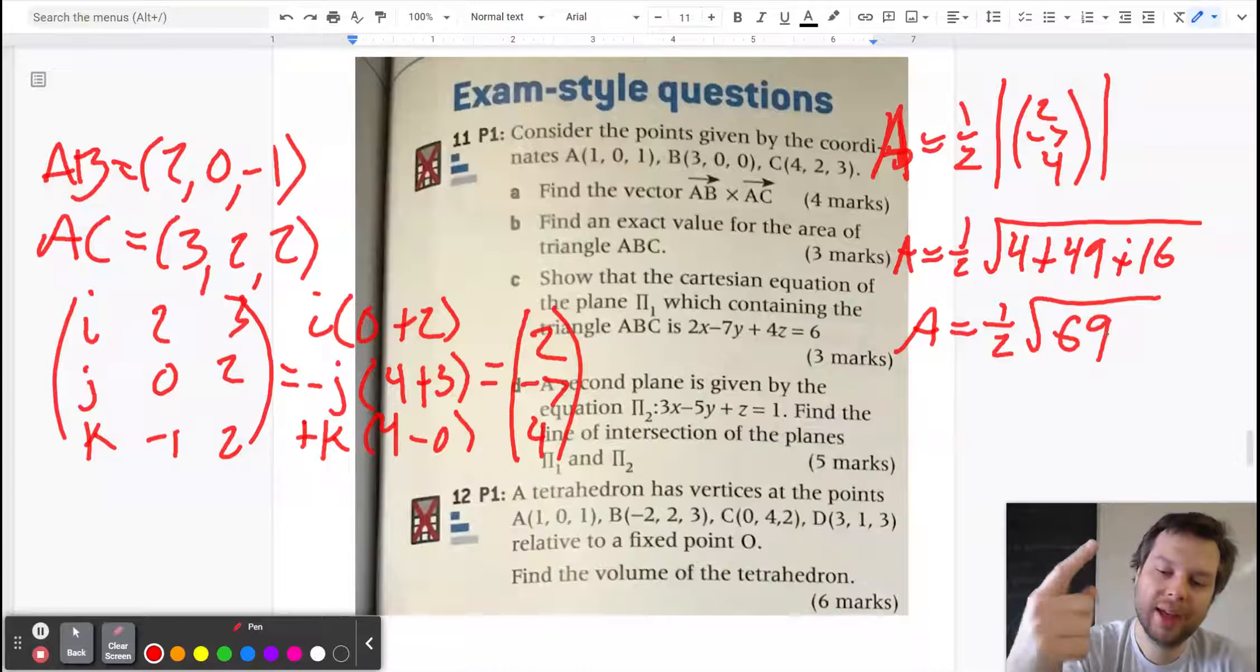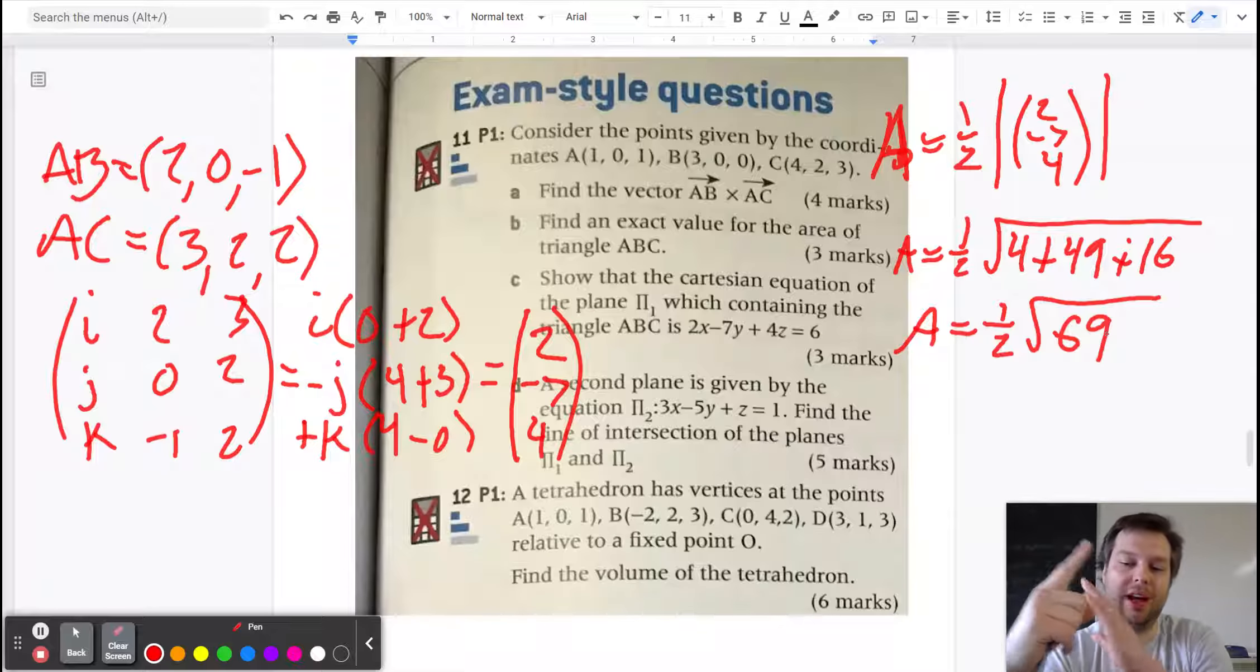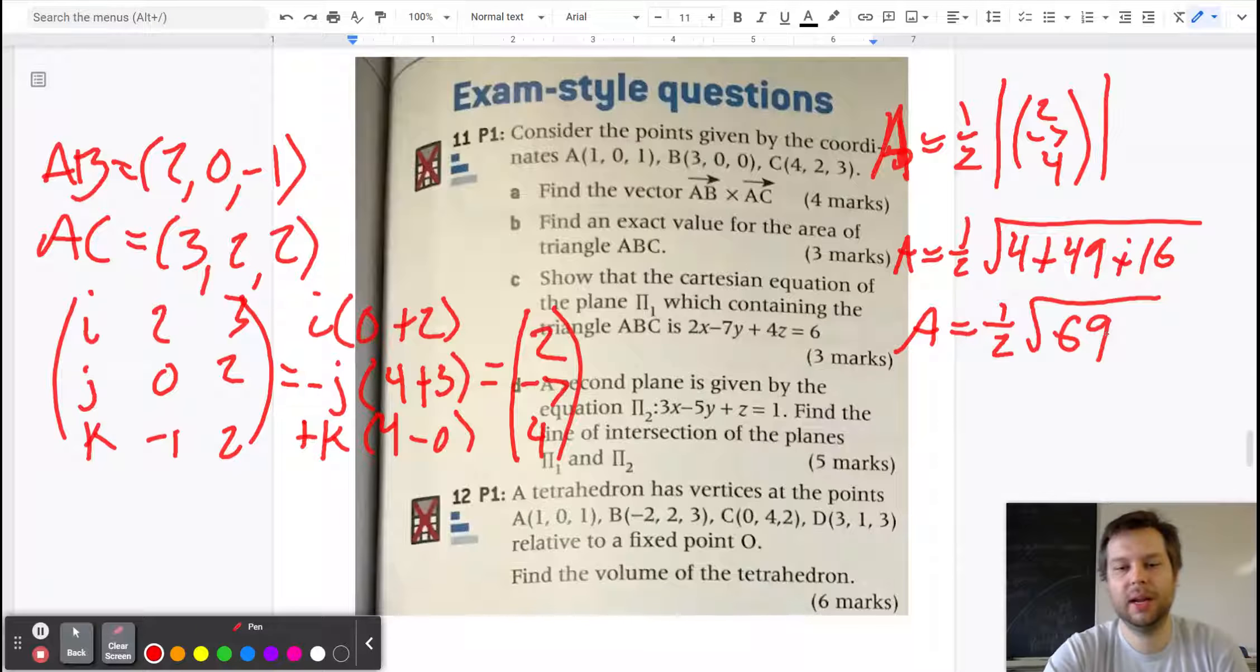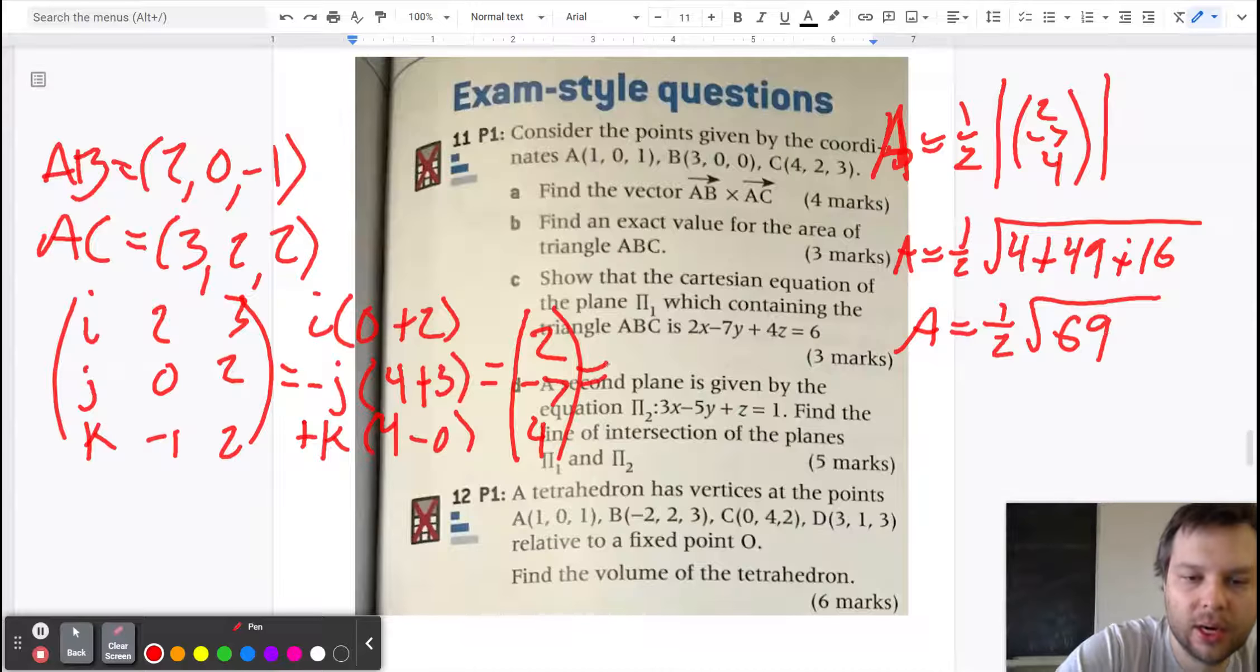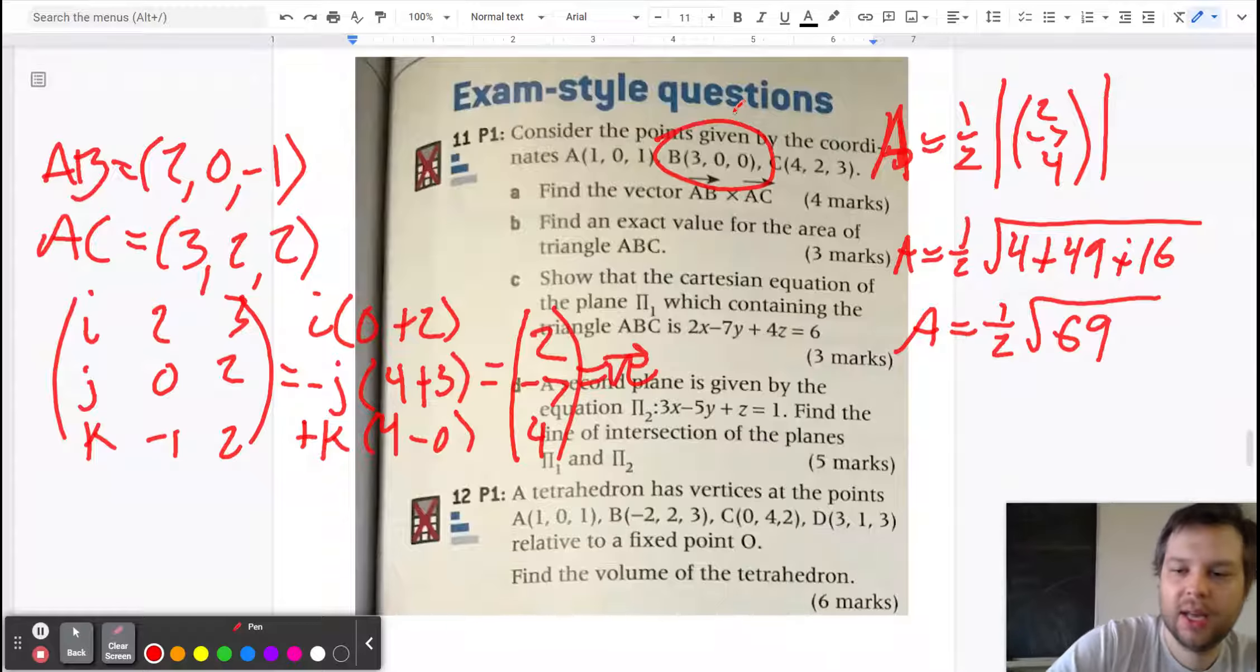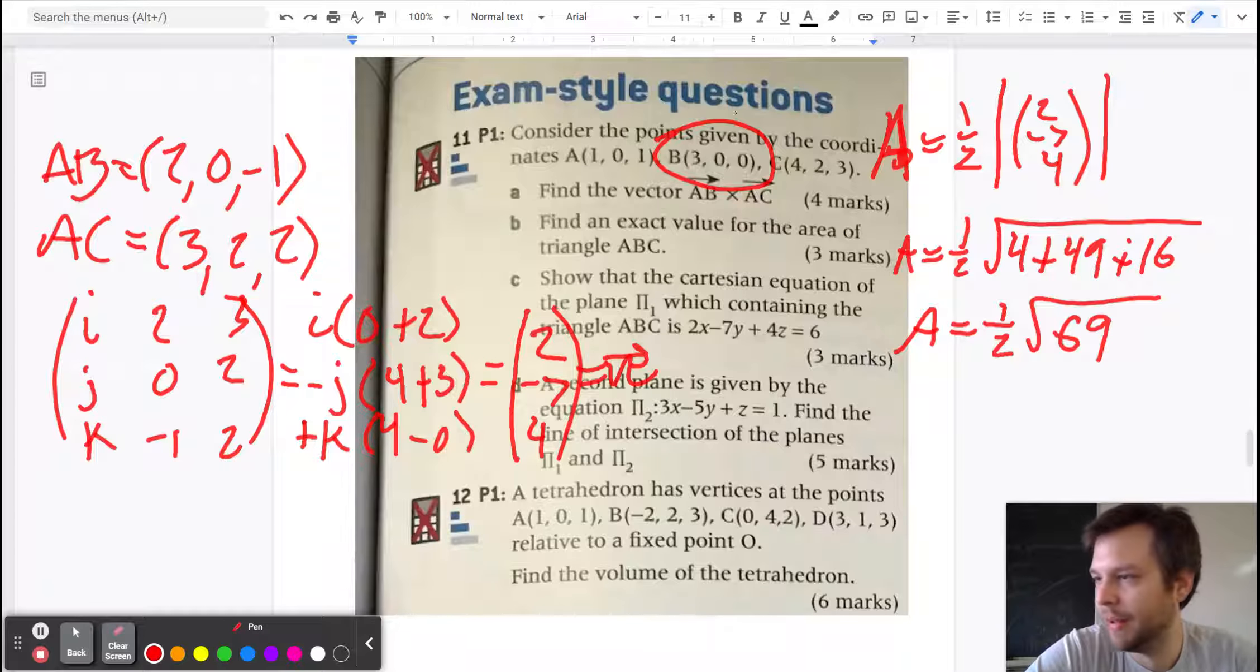When you have a normal vector and you dot product that with an arbitrary vector in the plane you get zero. So what I'm going to do is take our normal vector and I'm going to take my favorite point B, and I'm going to dot product normal vector with (x minus b, y minus b, z minus b).